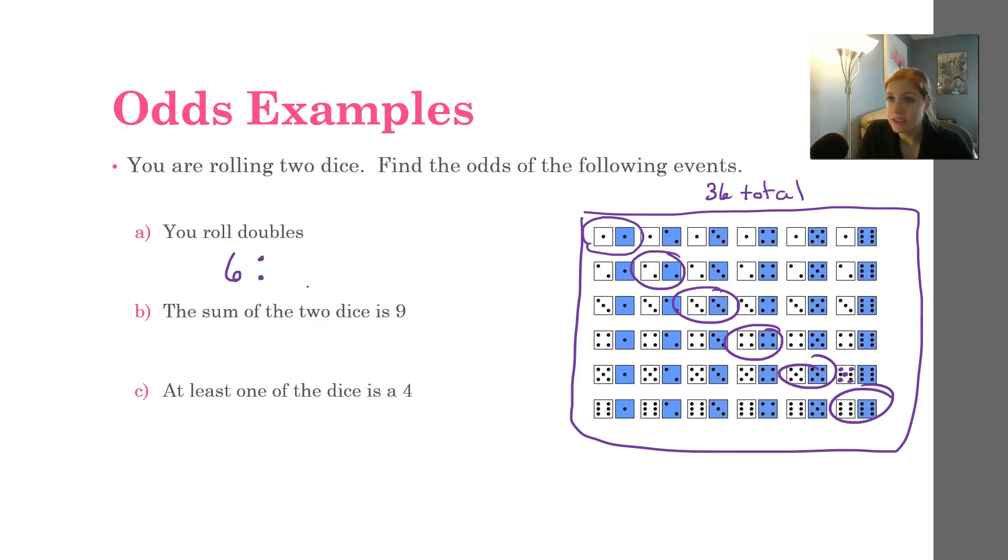And since we're doing odds, we need to find the number of ways to not roll a double. Well, that would be everything else. So I can just take the total, which is 36, subtract off that original number, 6, to find there are 30 ways to not roll doubles. So for anybody that plays Monopoly, 30 ways to not get out of jail.